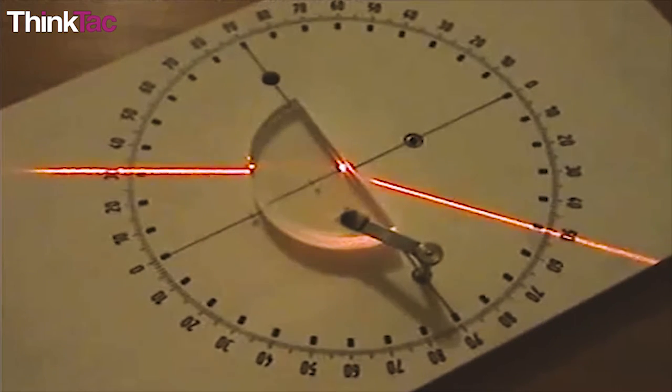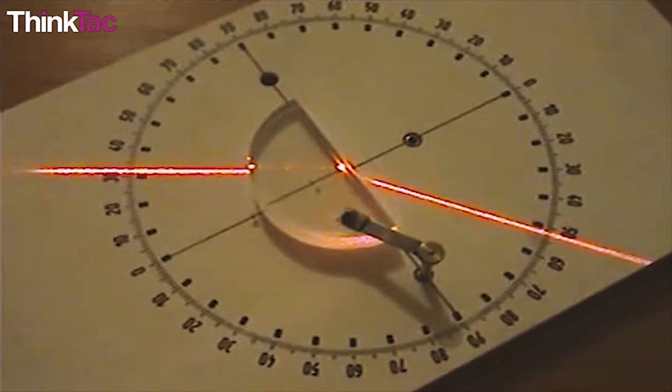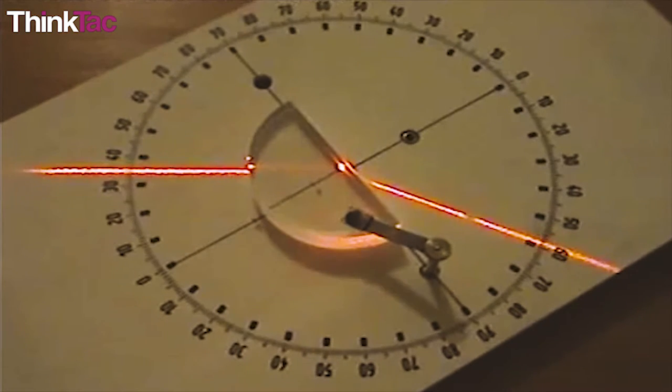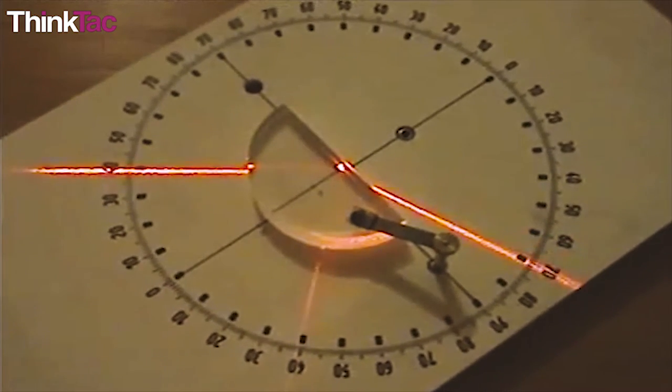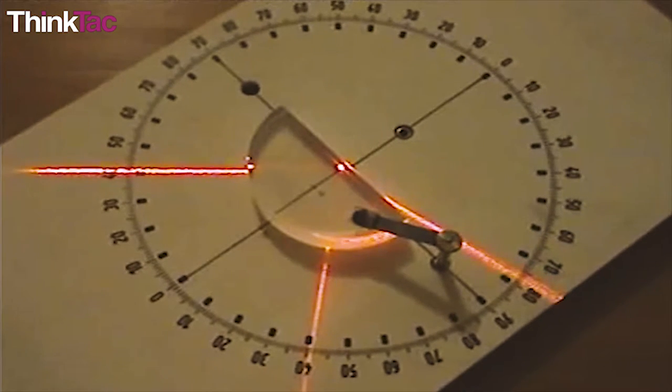Sometimes when a ray of light hits the surface of the next medium at an angle of incidence greater than a particular angle, which is the critical angle, the ray is completely reflected and no part of it is refracted. This happens when the following two conditions are met.